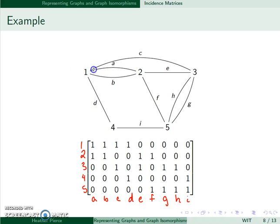I can see that one is incident to A, B, C, and D. So those have a one. The rest have zeros.